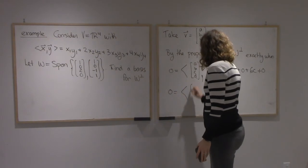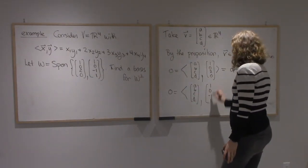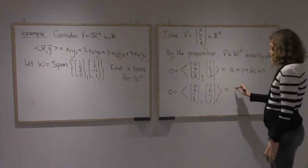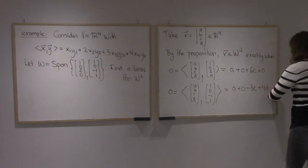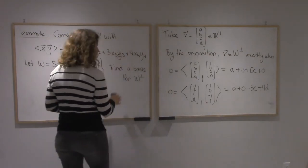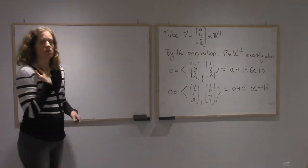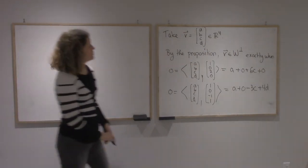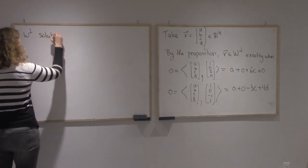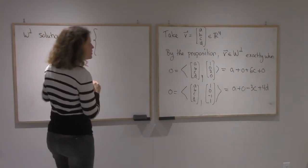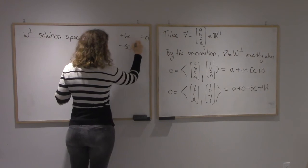The second condition is that (A, B, C, D) is also perpendicular to the second generating vector, which is (1, 0, -1, 1). Computing that inner product gives us A times 1 plus 0 minus 3C plus 4D equals 0. So the second equation is A - 3C + 4D = 0.